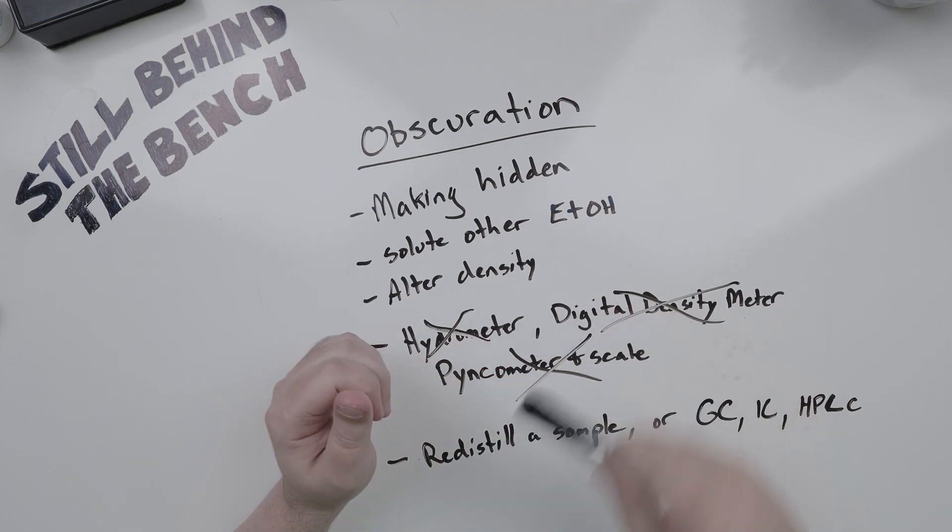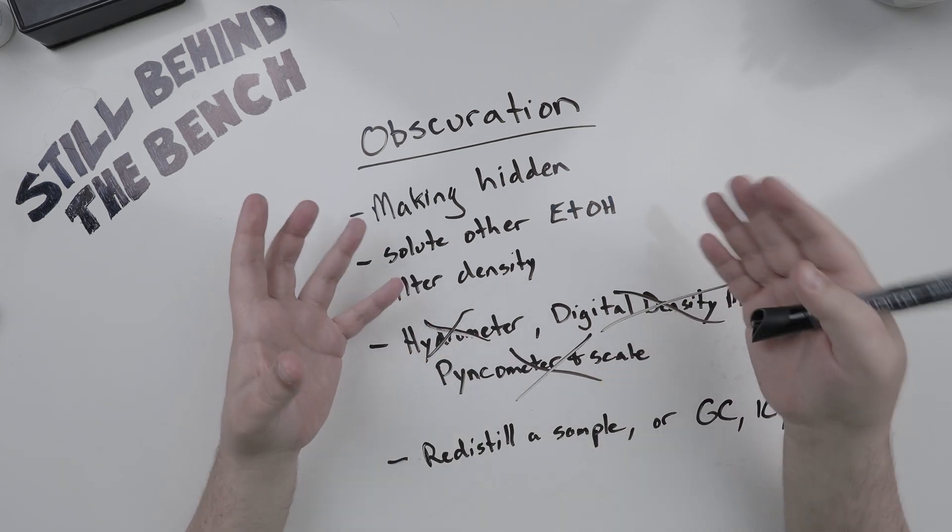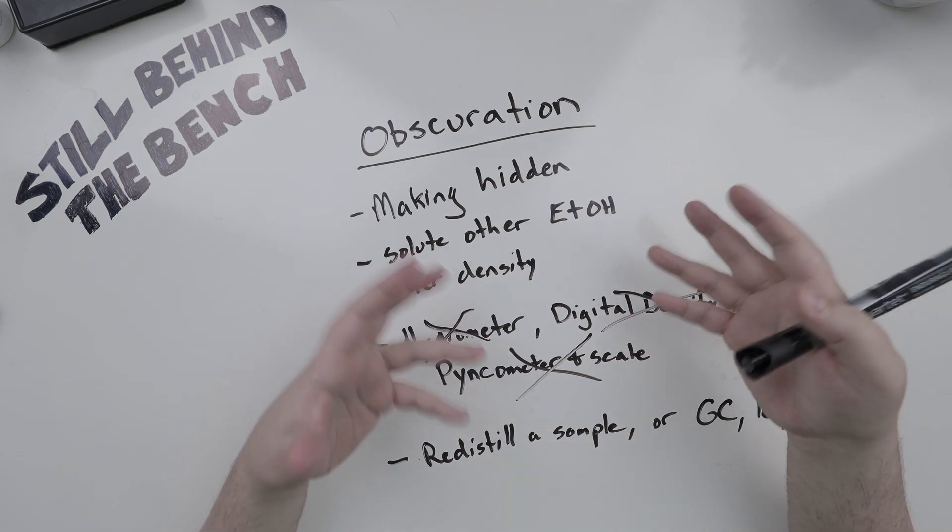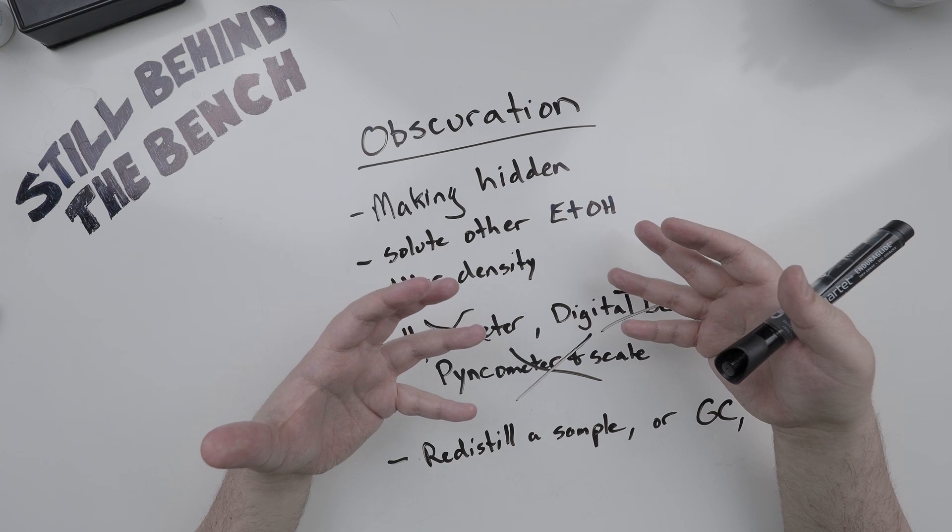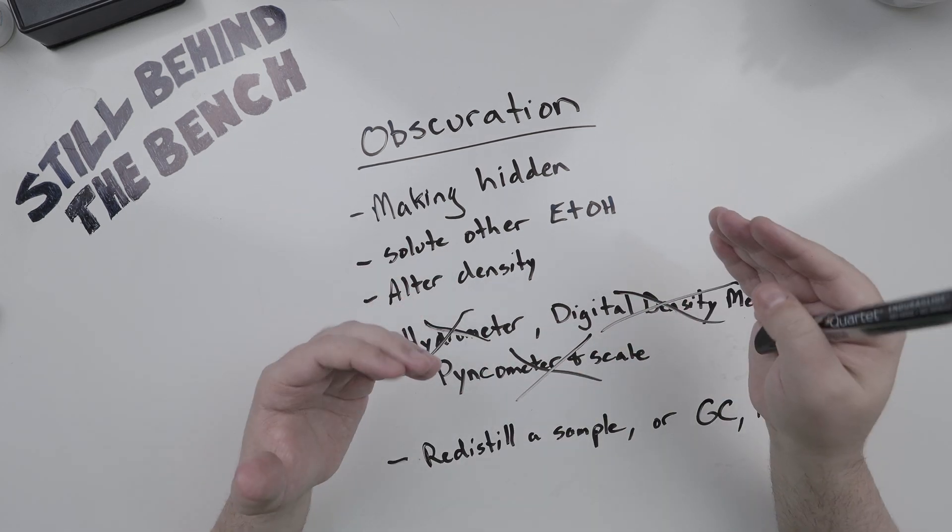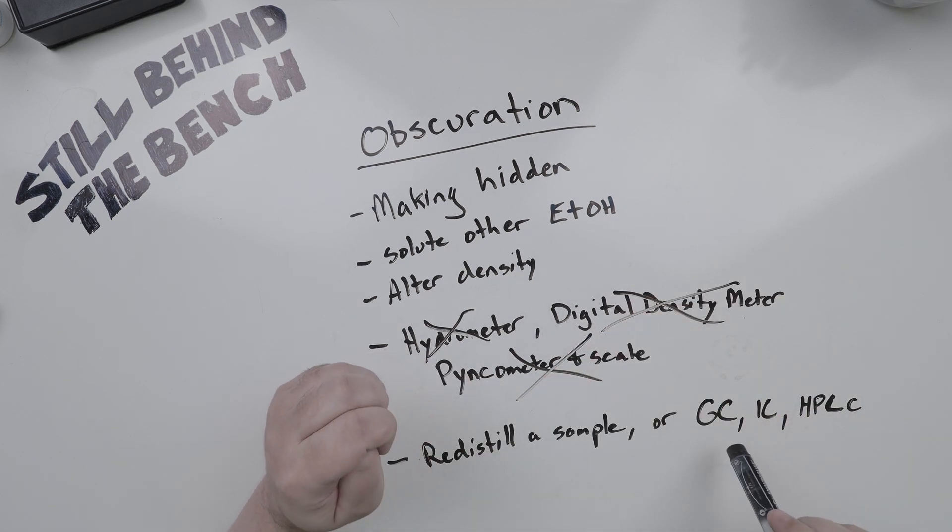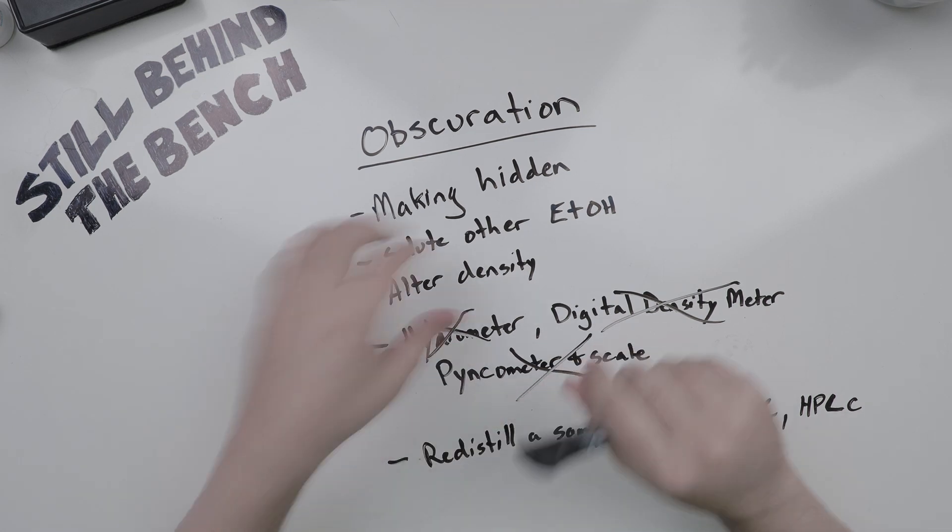You only have two options really to find out what the true ABV or proof value is. Take a small portion and re-distill a sample of it. You could buy a small glass lab setup off eBay and just re-distill a small sample, then measure that using any of these things. The other option, if you have the money or you're willing to send it out, is you could have someone do an analysis using gas chromatography, ion chromatography, or high pressure liquid chromatography. These would give you quick answers to the ABV regardless of what else is in there.